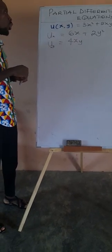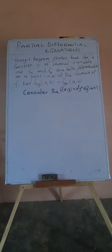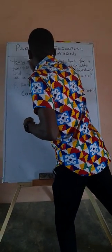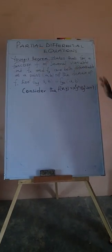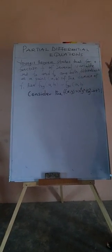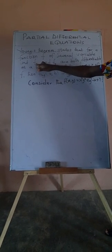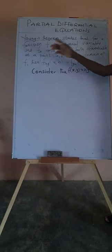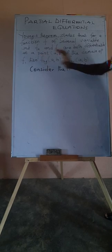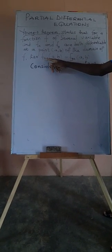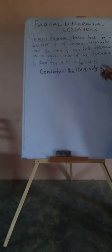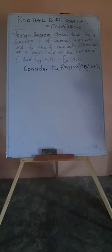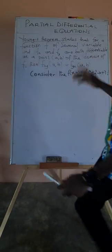So we are going to develop a theory out of this. Yang's theory states that for a function F of several variables — when the function depends on two or more variables — if the partial differential of F with respect to X and the partial differential of F with respect to Y are both differentials we can find at the point AB of the domain of F, then the partial differential of F with respect to X then Y at point AB is always equal to the partial differential of F with respect to Y then X at point AB.